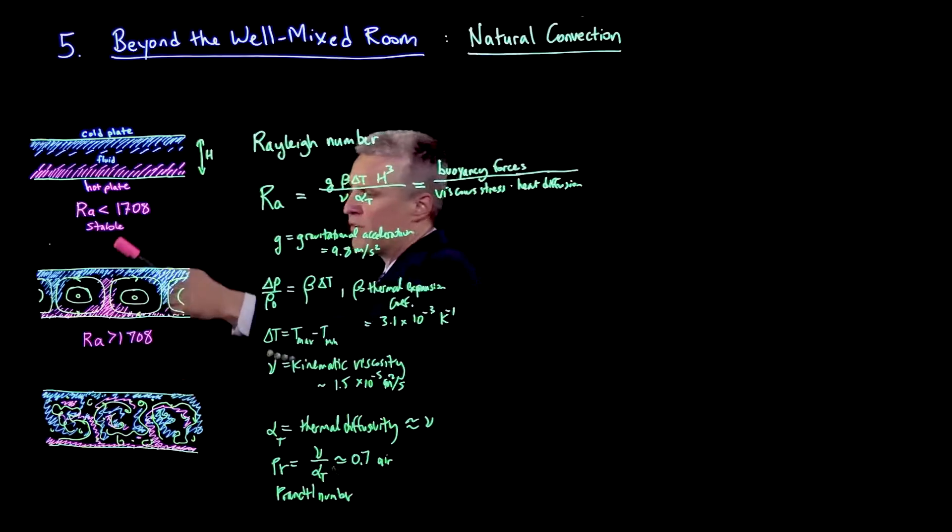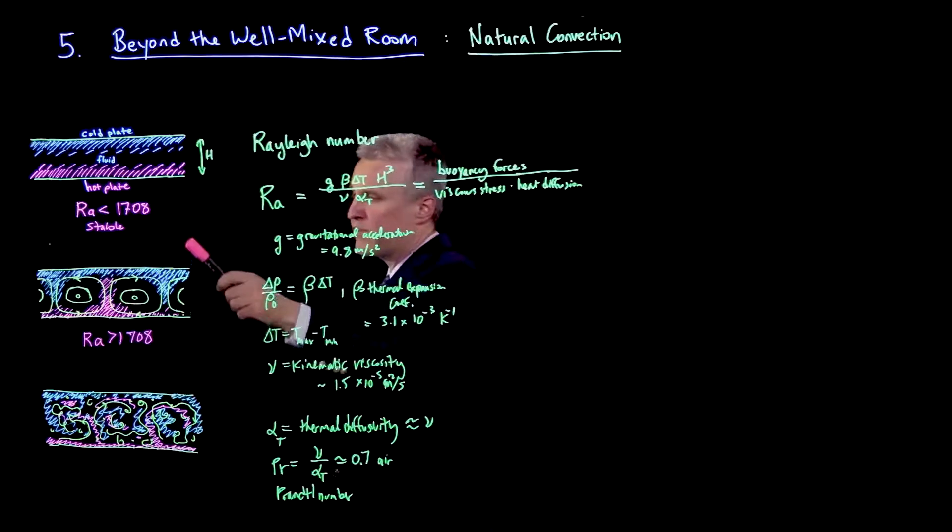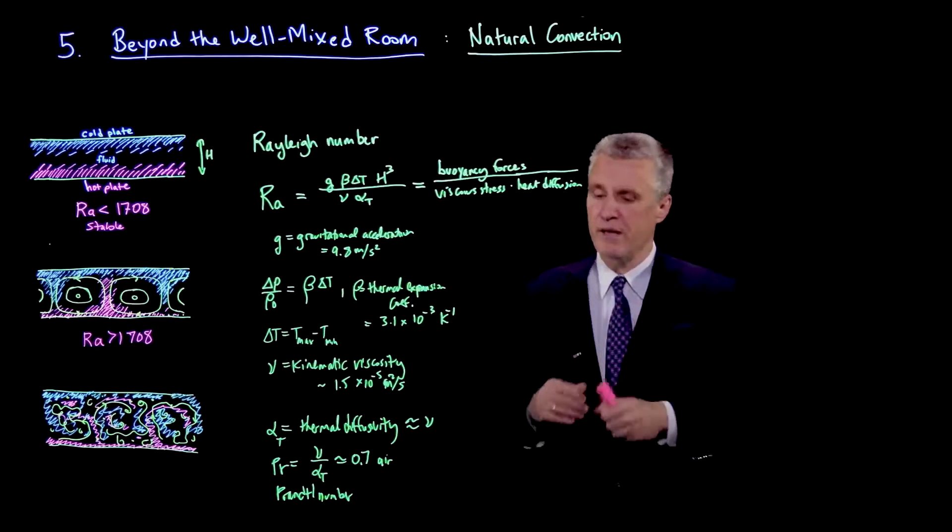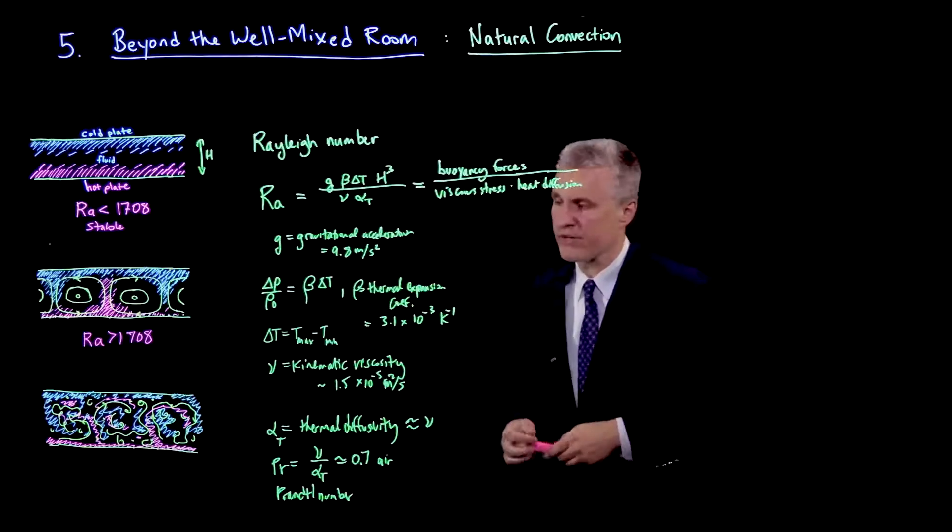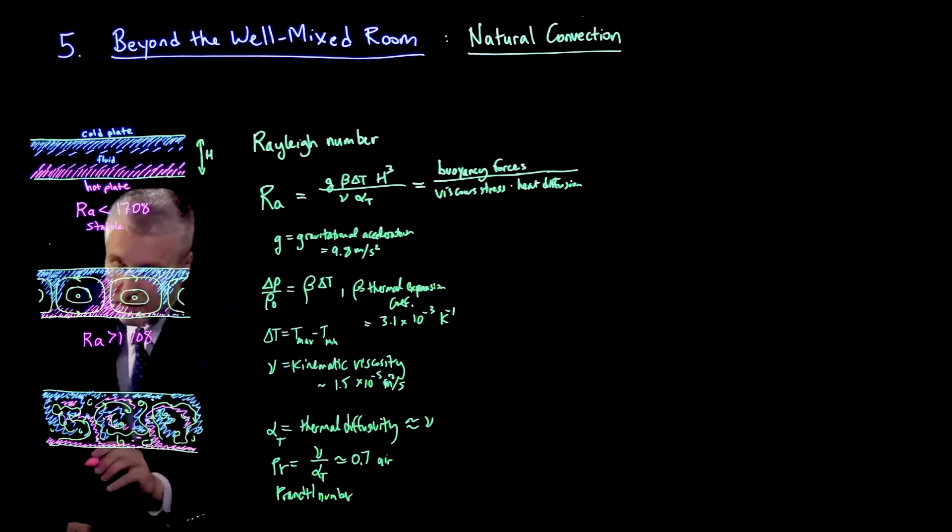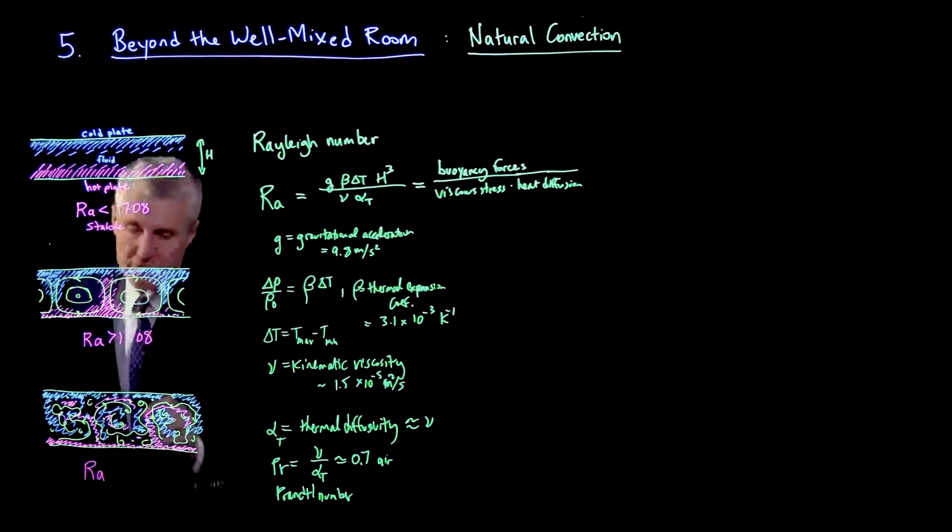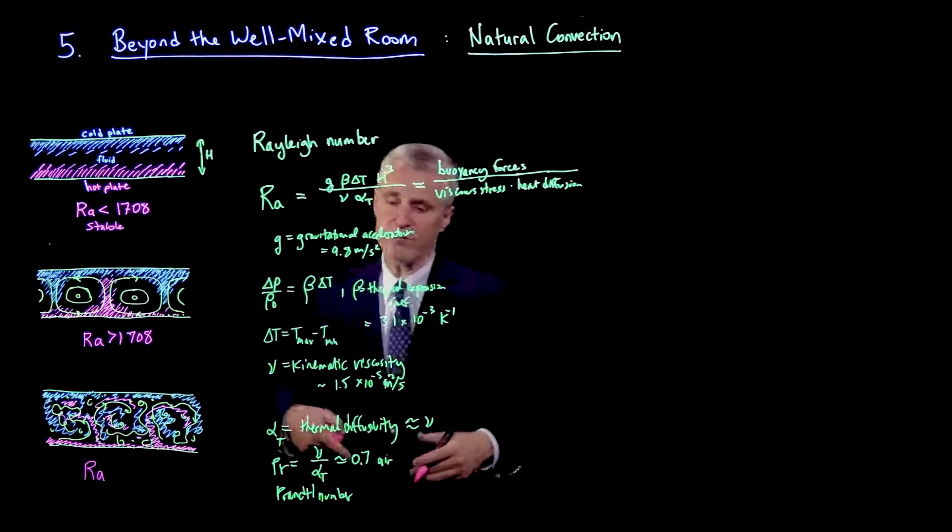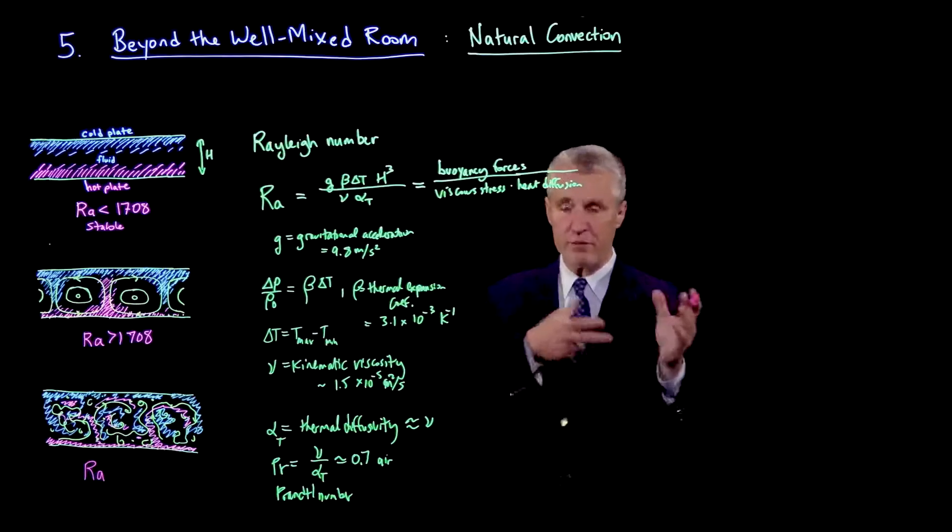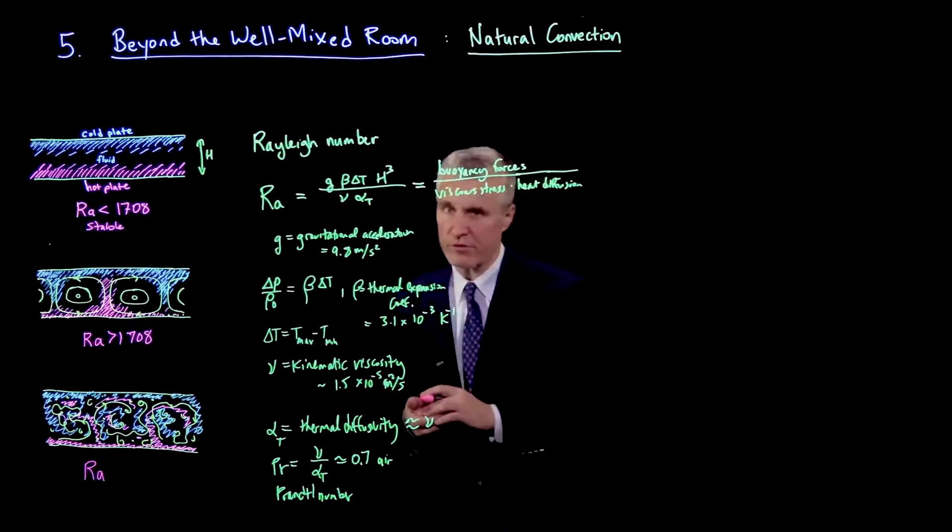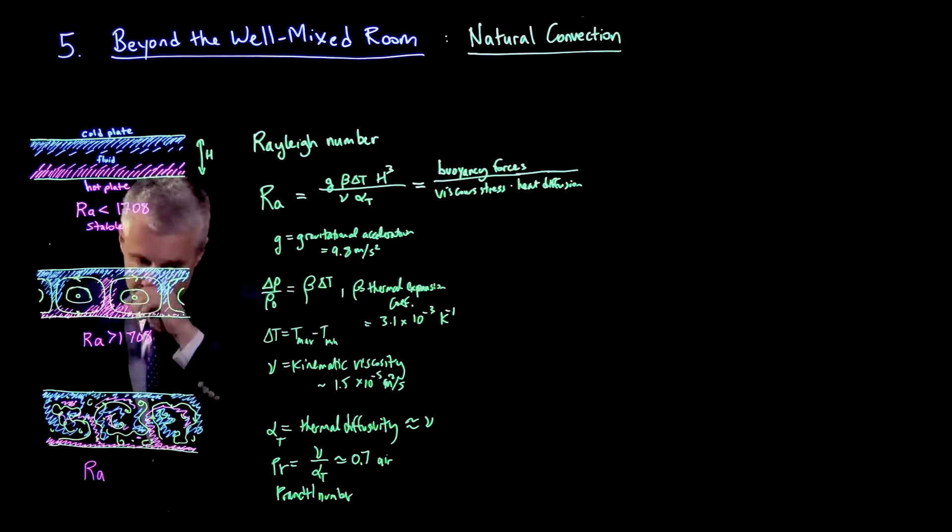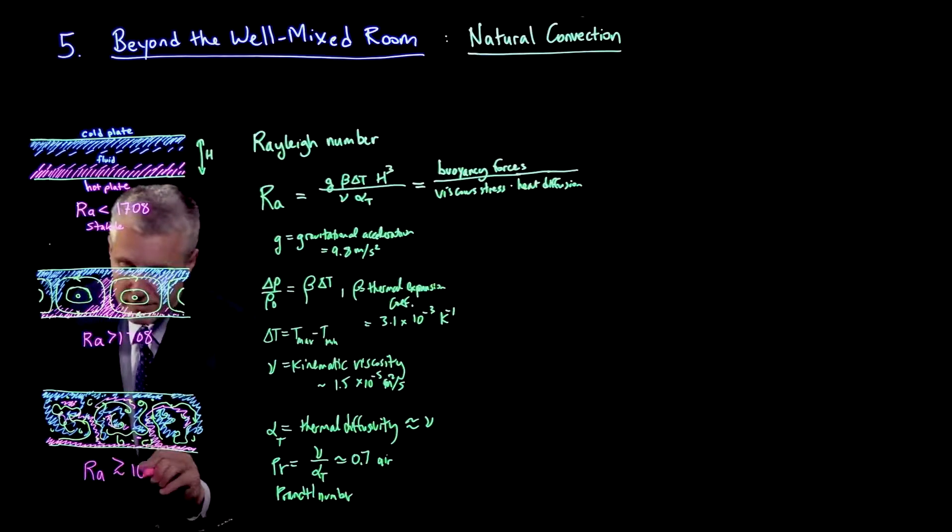But as you increase the Rayleigh number even further, and if you increase it a lot, then you eventually get to a complicated turbulent flow. If you increase the Rayleigh number on the order of 10 to the 4, you may have some unsteady situations, as we saw with vortex shedding. But if you go to a very high Rayleigh number, greater than about 10 to the 9, then you again get turbulence.